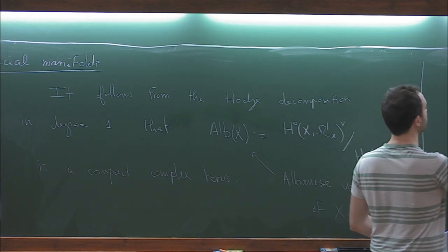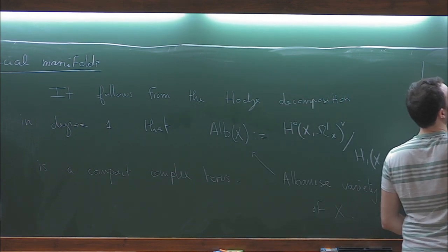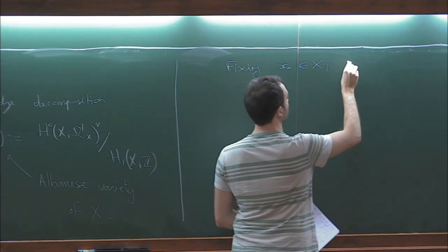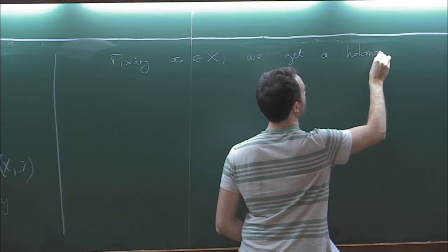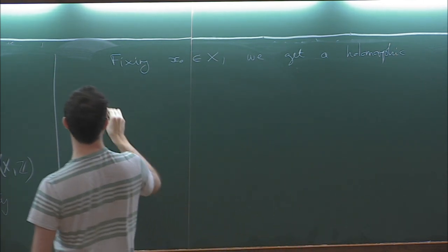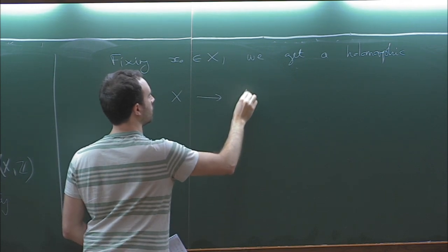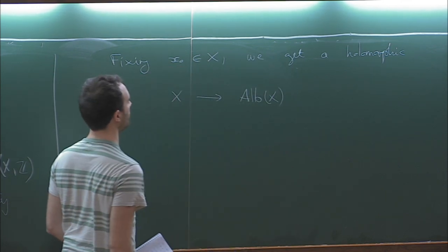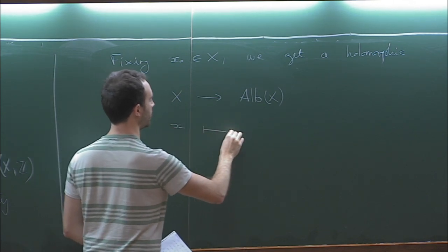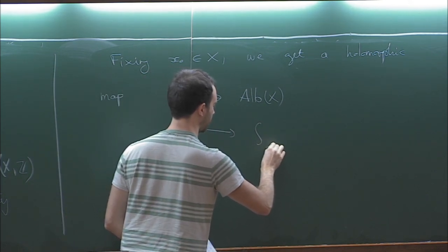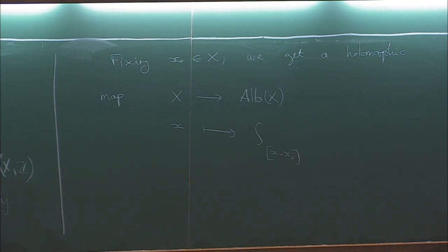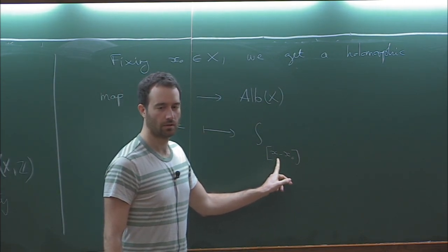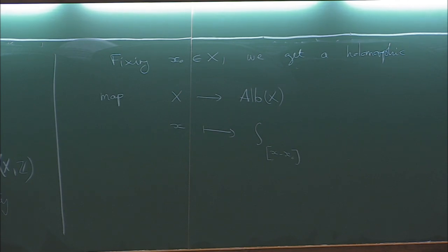This is called the Albanese variety of X. If you fix a point x₀ in X, you get a canonical holomorphic map from X to its Albanese, given by associating to a point the integral along any path from x₀ to that point. The choice of path is killed by the quotient.